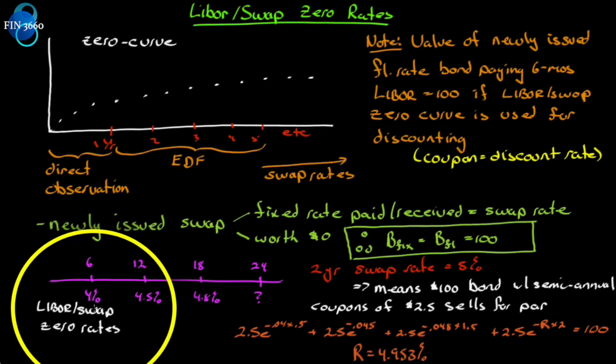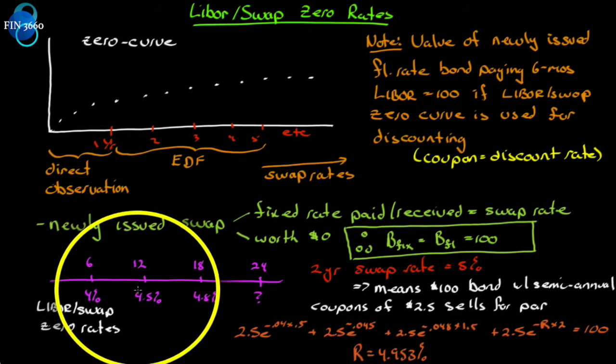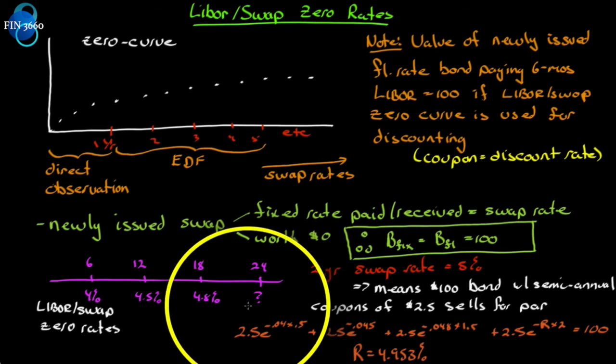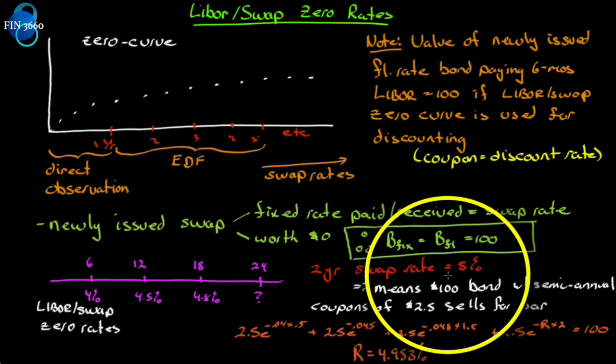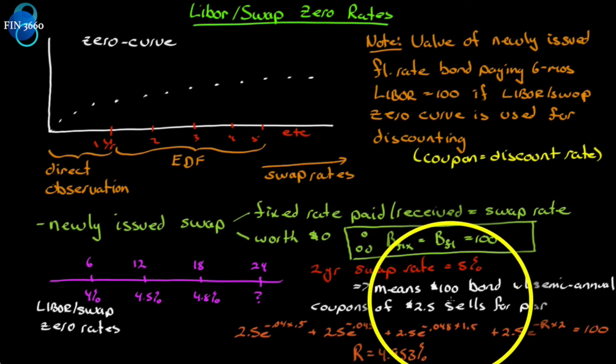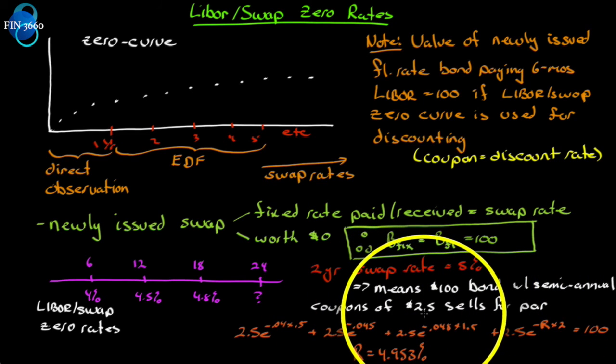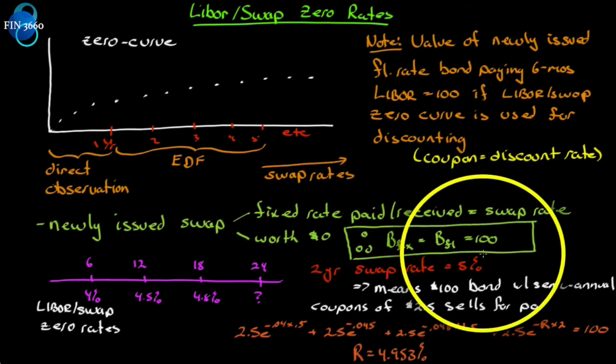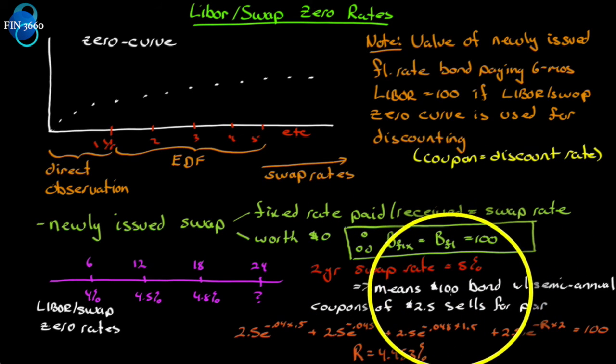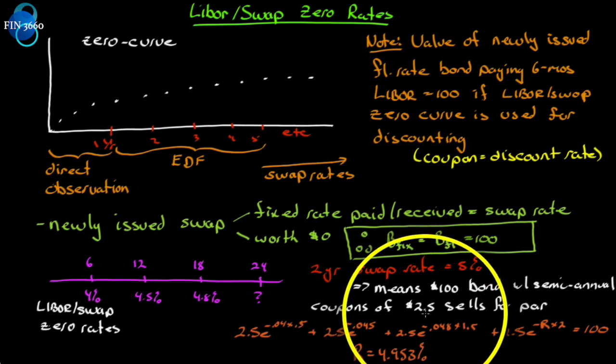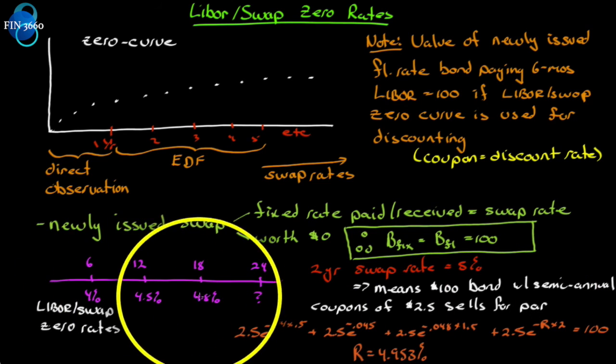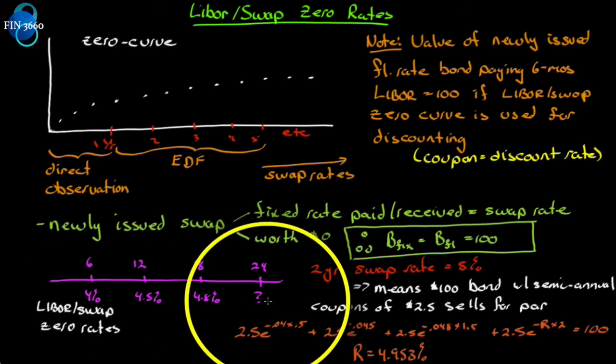Here's some observed zero rates. On a six-month rate, we have four percent. For a twelve-month zero, we have 4.5. A one-and-a-half-year zero is 4.8. The two-year zero, we don't know what that is. But we can take what we know. Let's take a two-year swap rate at five percent. This means that a hundred dollar bond with semi-annual coupons of 2.5 sells for par. That's what that swap rate means, because the equality in the green box must hold.